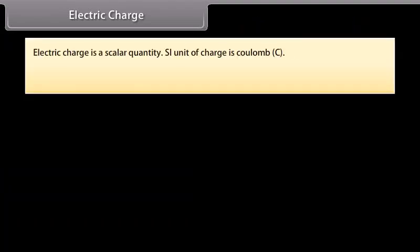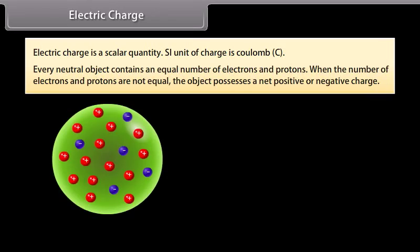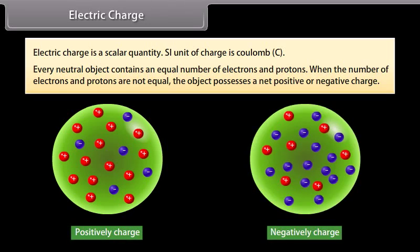Electric charge is a scalar quantity. The SI unit of charge is coulomb. Every neutral object contains an equal number of electrons and protons. When the number of electrons and protons are not equal, the object possesses a net positive or negative charge.